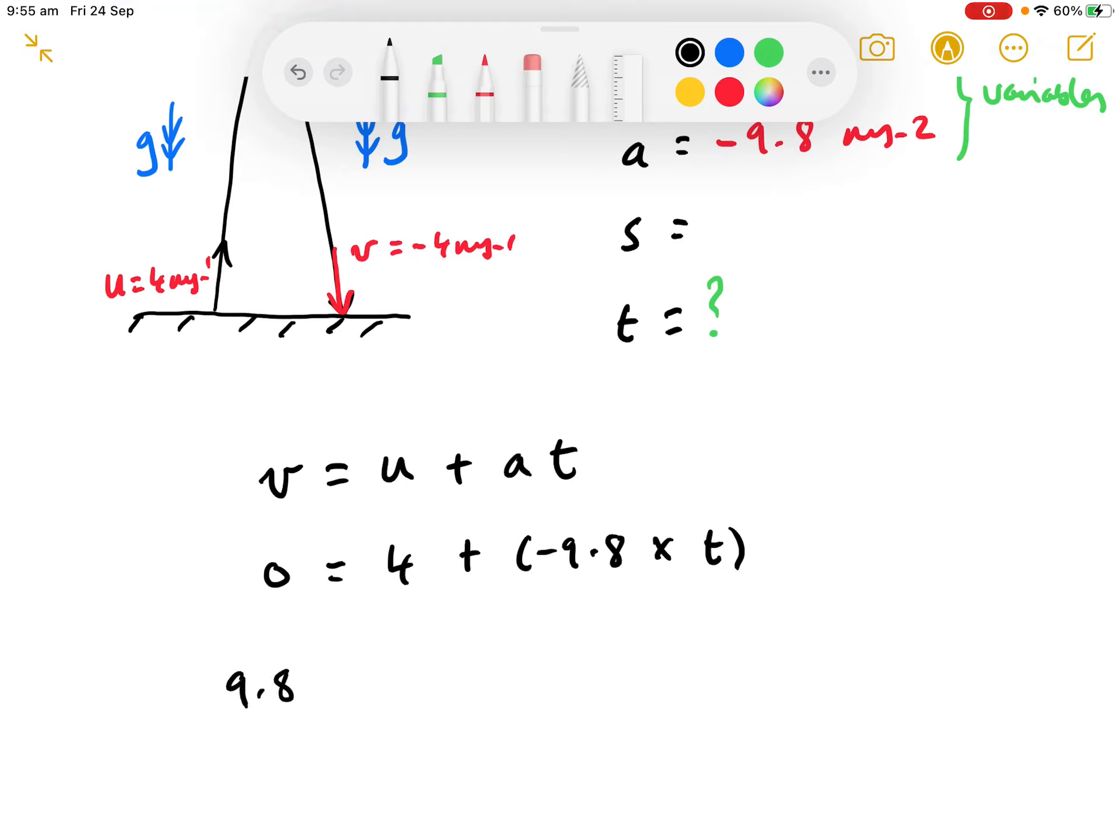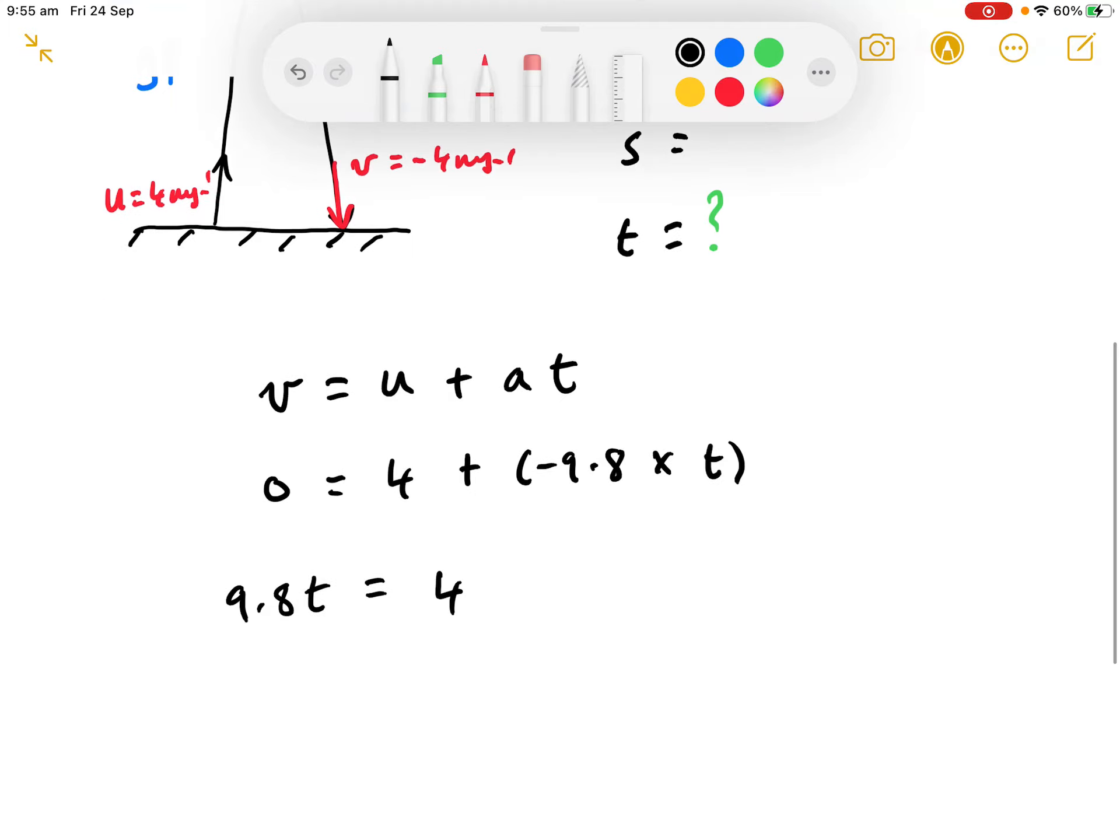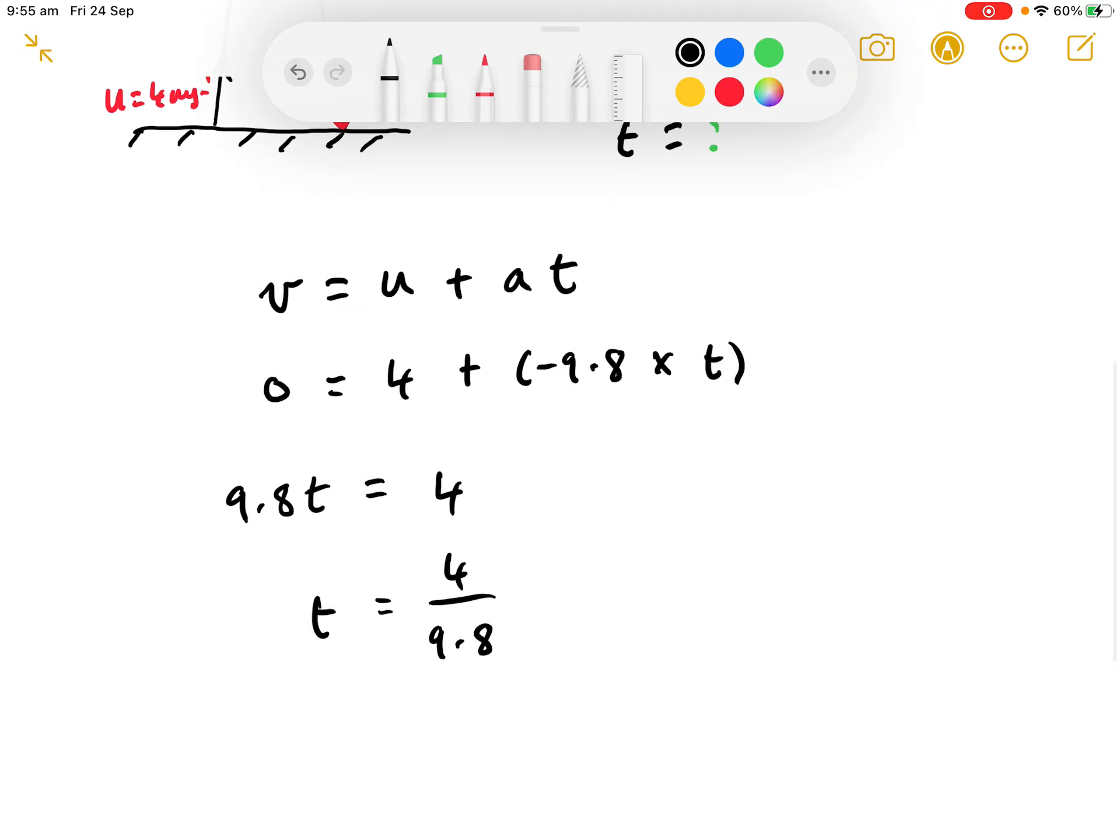Okay. So, we basically then can rearrange that to be 9.8t equals 4. When the minus comes over, it becomes positive. t equals 4 over 9.8.